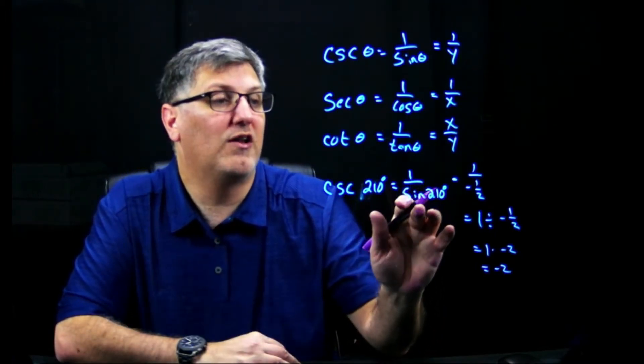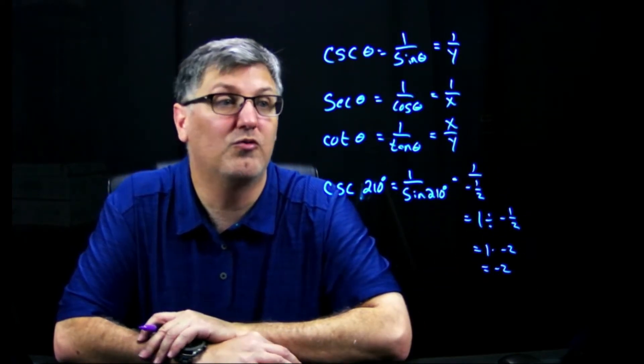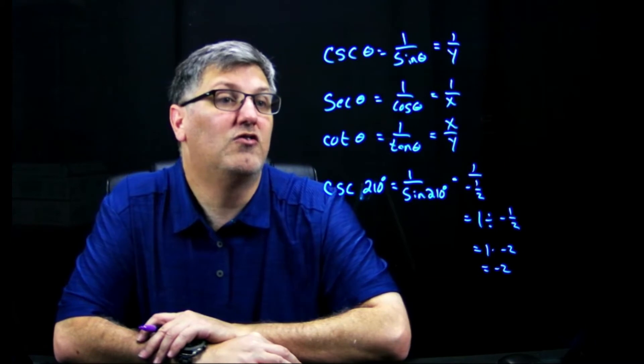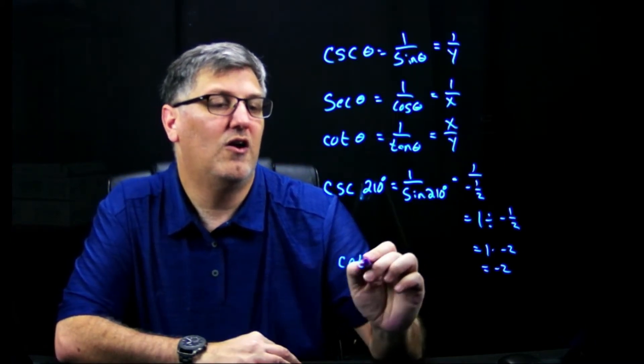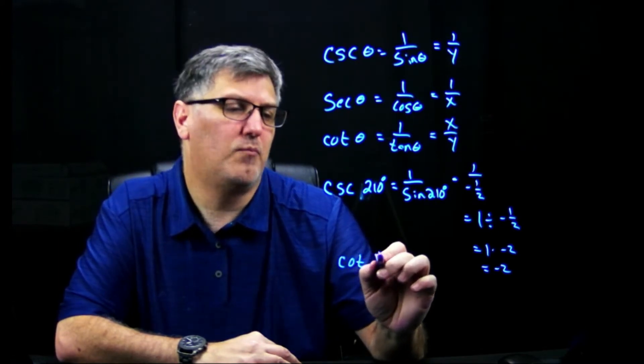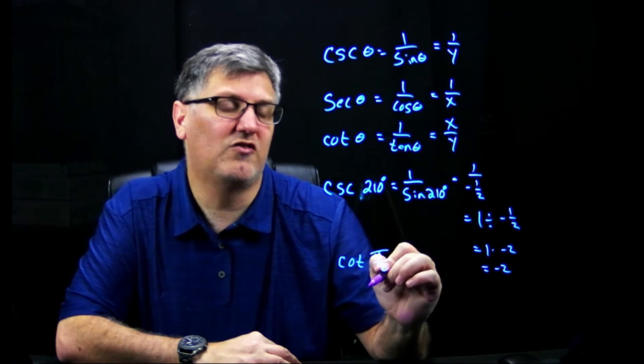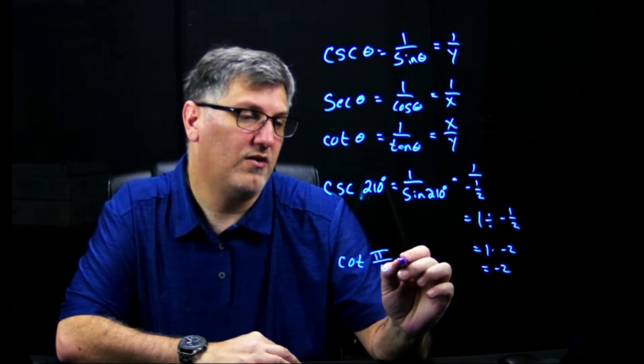So I'm going to constantly write it like this and then just do the math out like this to find my reciprocals. All right, so let's say, what is cotangent of pi over 6? And voila.